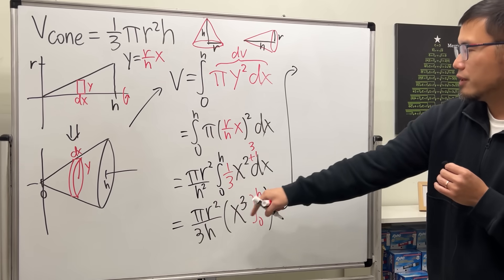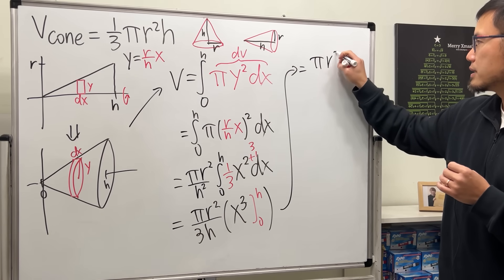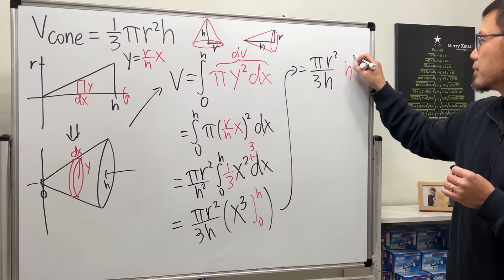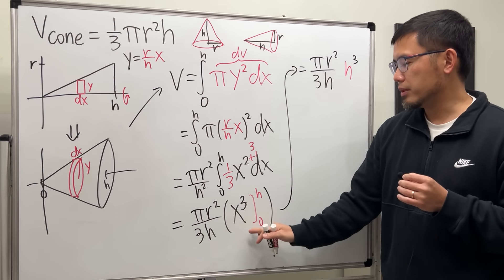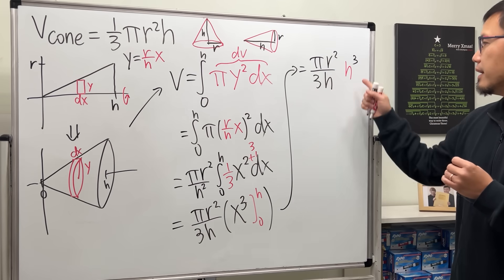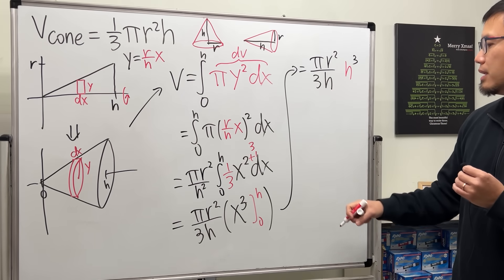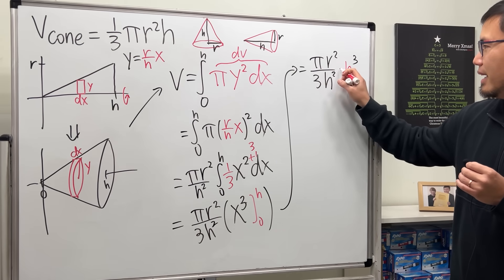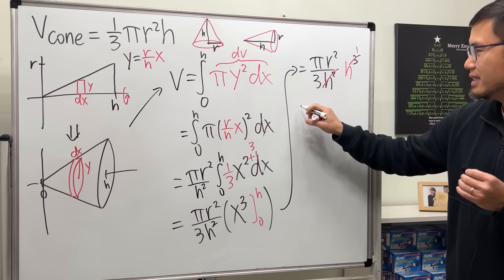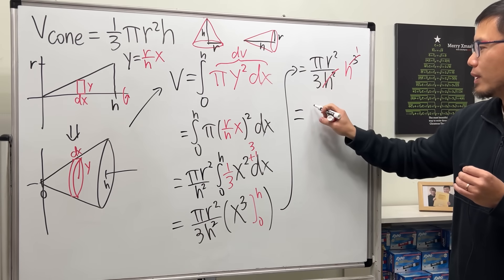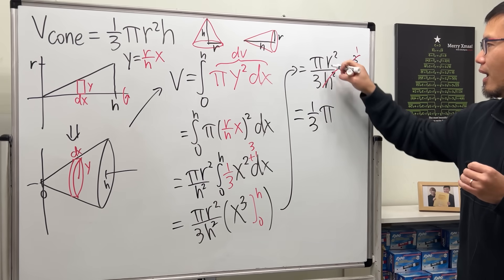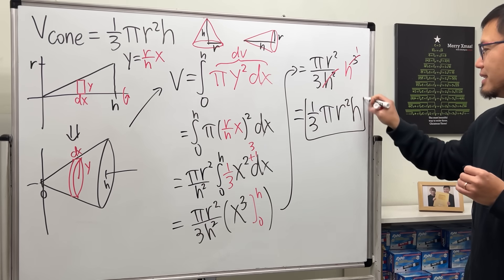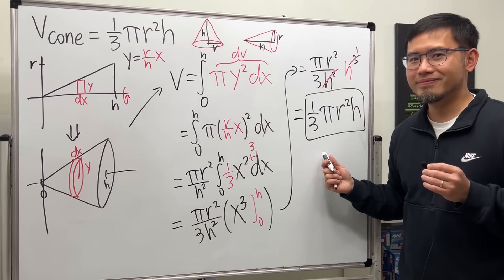All right. Putting h here. So in the front, we have pi r squared over 3h times h to the third power. And we should also put in 0. But putting 0 is just 0, so it doesn't matter. Now simplify this a little bit. We have to simplify this. h squared and this cancel. We have one more left. So ladies and gentlemen, we do have the one third, pi, r squared, and then we have the h to the first power right here. And that is the volume of a cone.